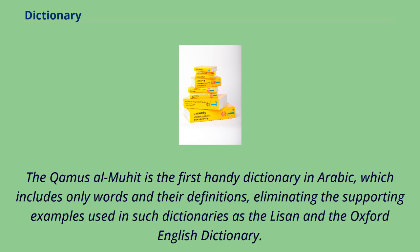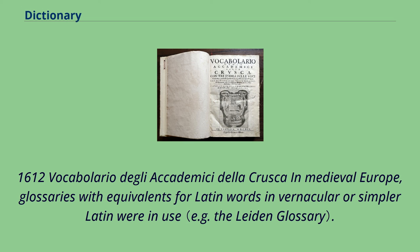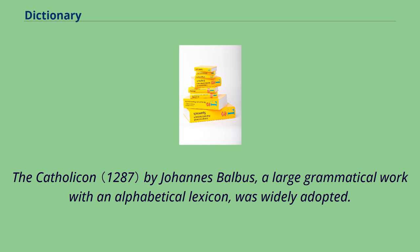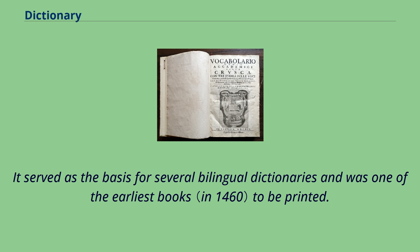In medieval Europe, glossaries with equivalents for Latin words in vernacular or simpler Latin were in use. The Catholicon by Johannes Balbus, a large grammatical work with an alphabetical lexicon, was widely adopted. It served as the basis for several bilingual dictionaries and was one of the earliest books to be printed.